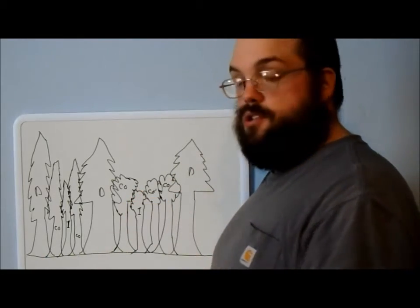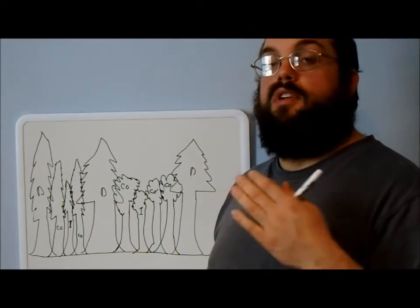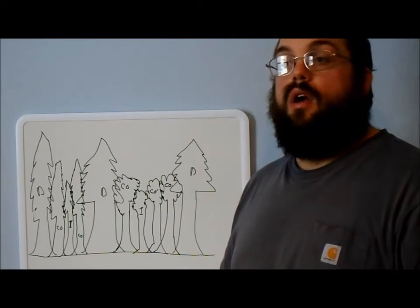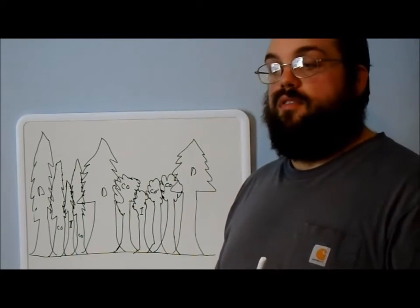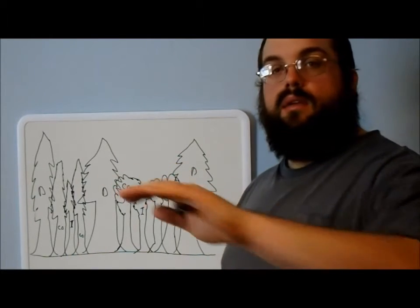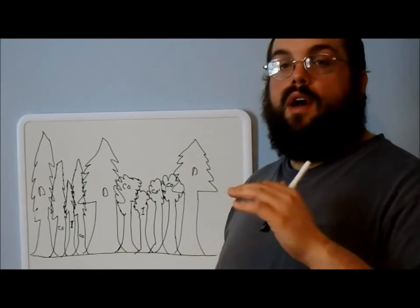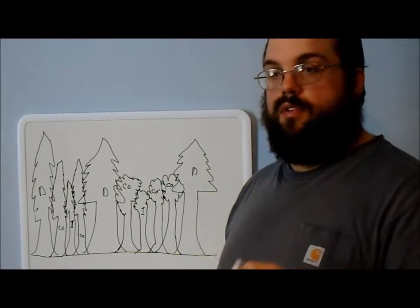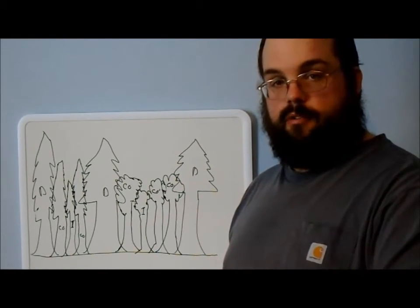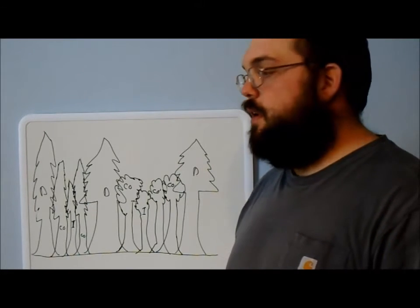Co-dominant trees are ones whose crowns are basically at the main level of the forest. They also get most of their sun from the top — it comes down on them from the top — and just very, very little from the sides.